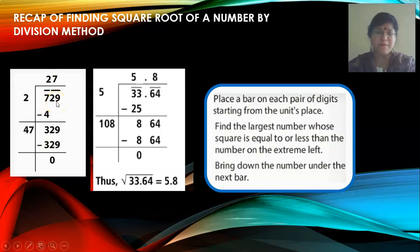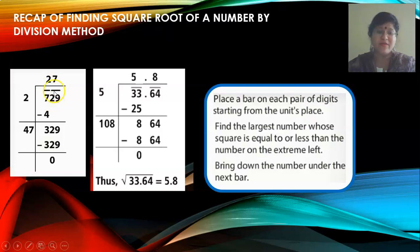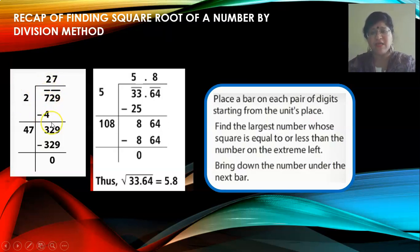For 729: units, tens, and hundreds. You are going to pair it — 7 remains alone. You put a bar on top, and 29 is the units and tens together. Then 2 into 2 gives you 4. You take the square of the number. You cannot take 3 because 3 squared is 9, which is greater than 7.